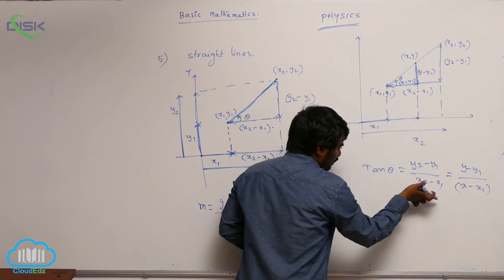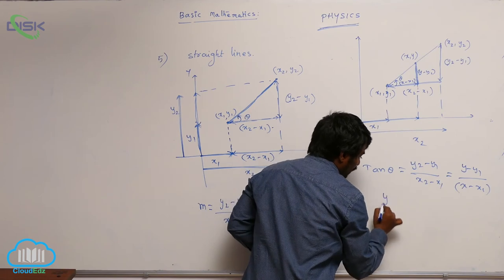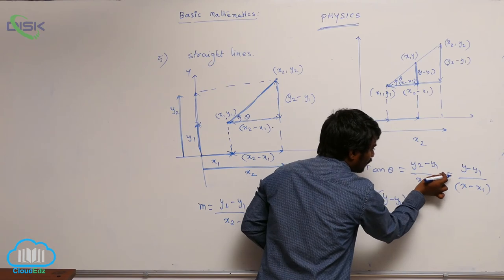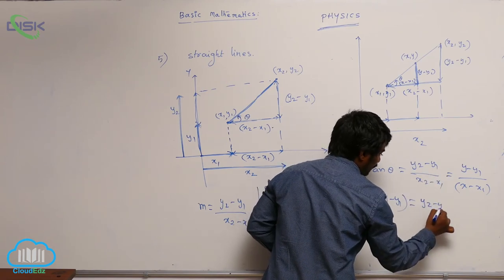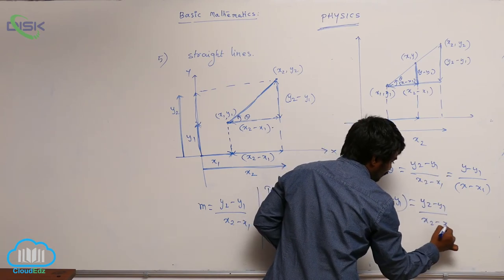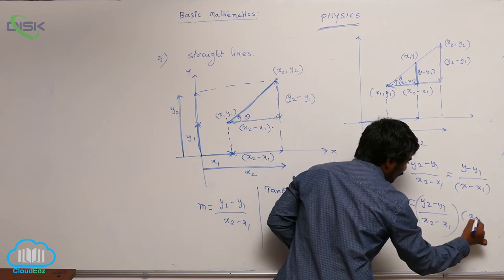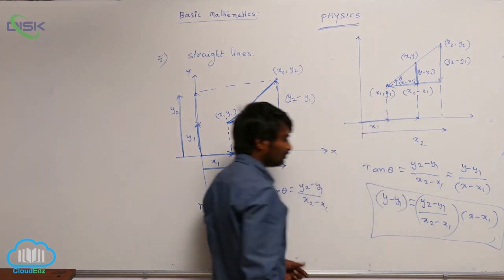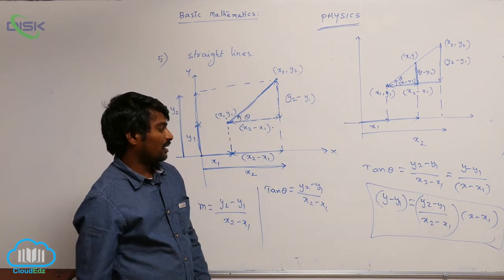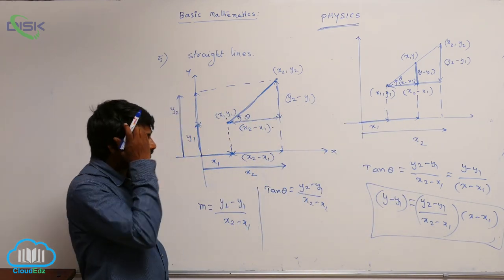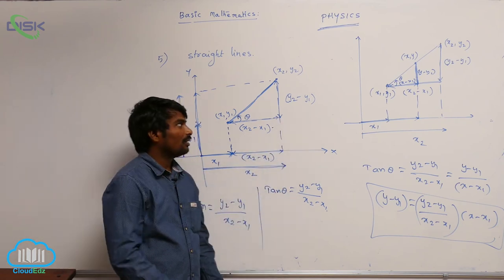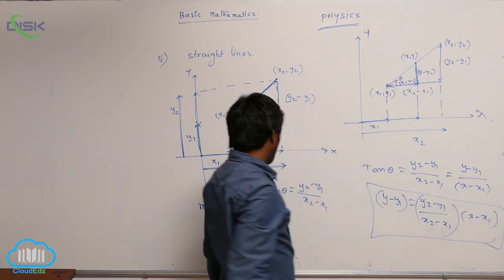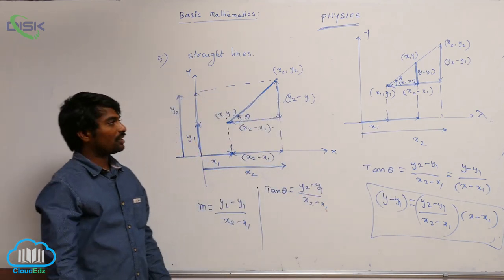So from this, what you can write? y minus y1 is equal to — you can multiply with x minus x1 — so y2 minus y1 by x2 minus x1 into x minus x1. So this is the straight line equation. Easily with the help of slopes, we can go for calculating the equation of a straight line.